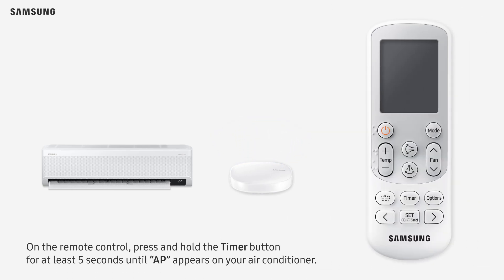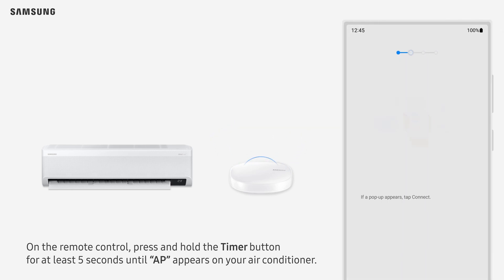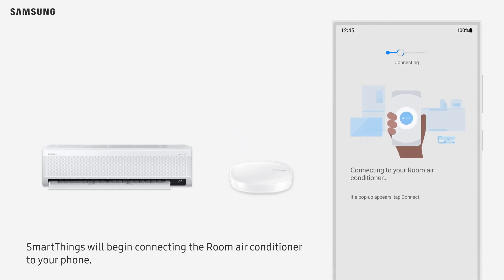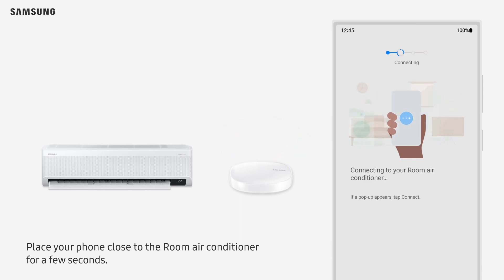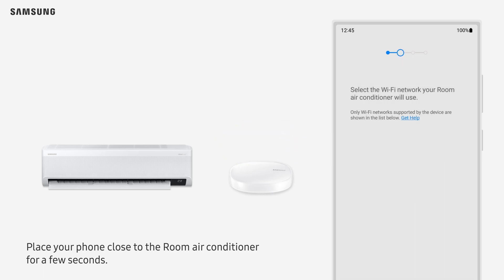On the remote control, press and hold the timer button for at least 5 seconds until AP appears on your air conditioner. SmartThings will begin connecting the room air conditioner to your phone.